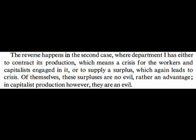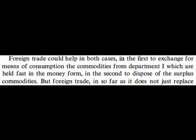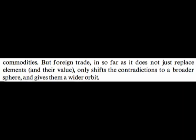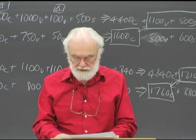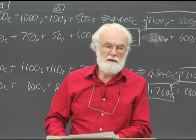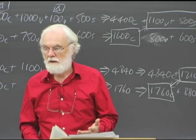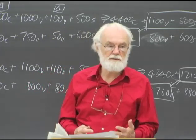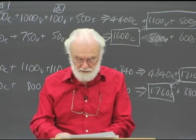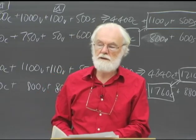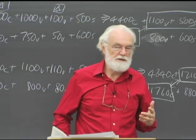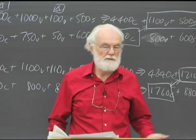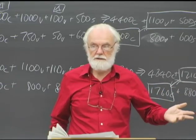The annual turnover is something which is assumed. He also assumes that the economy is closed — no foreign trade. This comes up specifically on page 544, where you may find a situation in which department one has either to contract its production, which means a crisis, or supply a surplus which again leads to crisis. Foreign trade could help in both cases — either to exchange for means of consumption or to dispose of surplus commodities. But foreign trade, insofar as it does not just replace elements and their value, only shifts the contradictions to a broader sphere and gives them a wider orbit. I think this is a very telling way of putting it: what I call the spatial expansion and spatial dynamics of capital — they never solve capital's problems, they simply expand those contradictions to a broader sphere and give them a wider orbit.